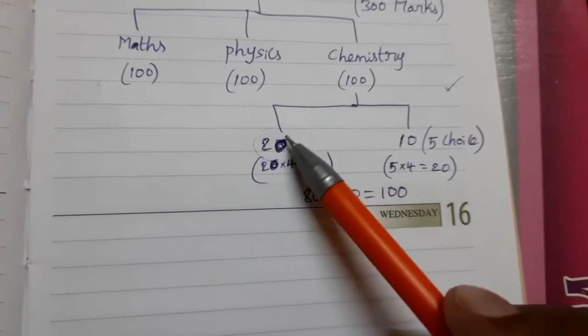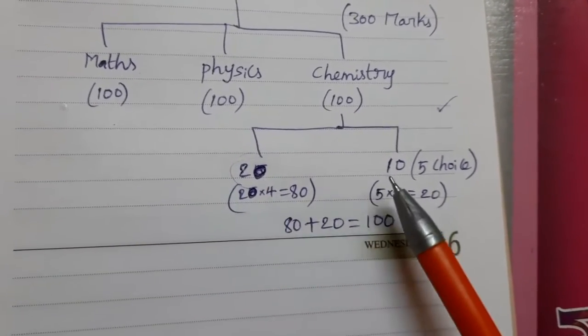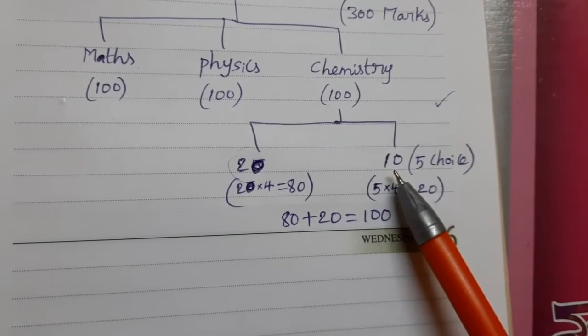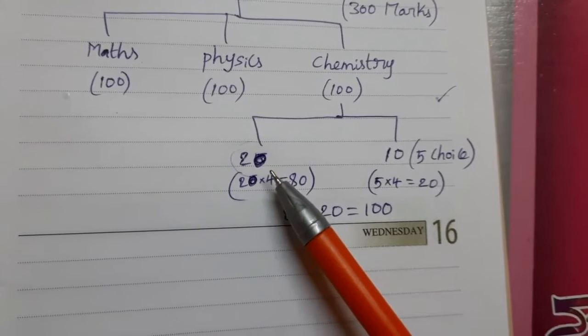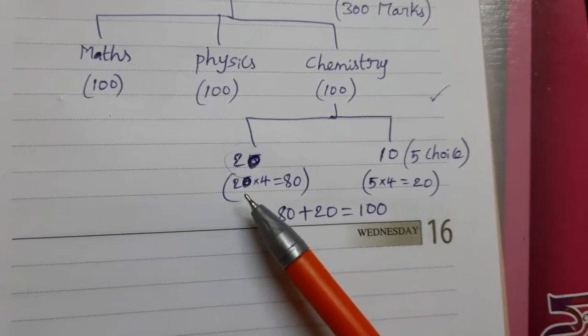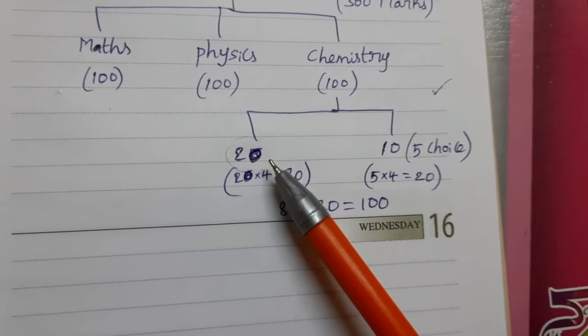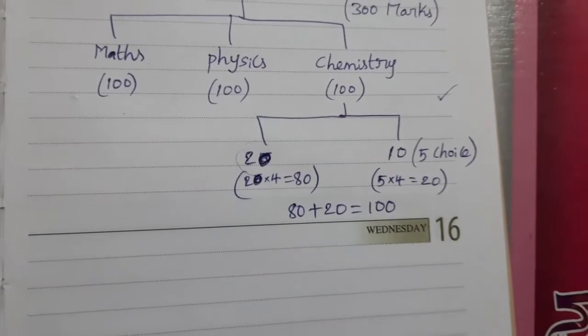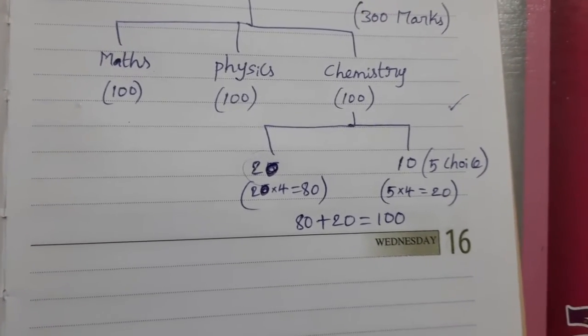Regarding Chemistry, I am telling two types of questions are there: 20 multiple choice questions and 10 numerical type based questions. In this 20 questions, each question carries 4 marks, so 20 into 4 is 80 marks. All the 20 questions we should attempt. These are single answer type questions and they have negative marking also.